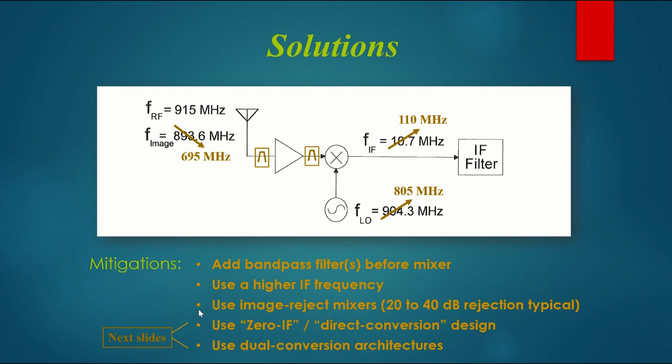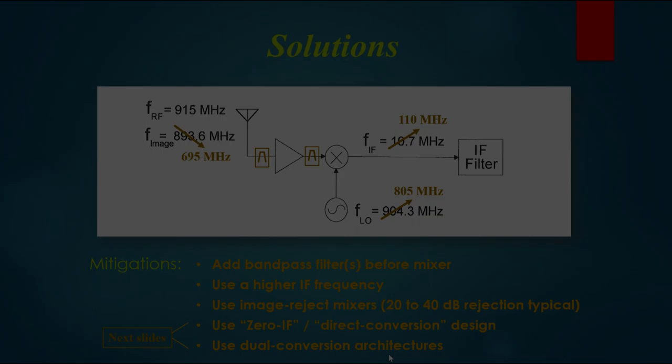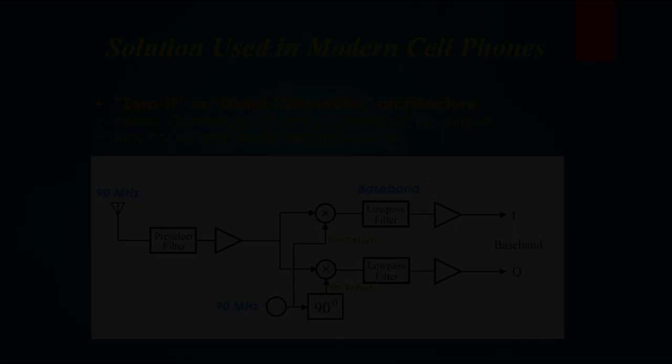A third possible mitigation is to use what's called an image reject mixer. These tend to offer about 20 to 40 dB of extra rejection. Either alone or in conjunction with these filters, they'll improve things by another 20 or 40 dB. What's done a lot of times today is to use what are called zero IF or direct conversion designs. And dual conversion architectures.